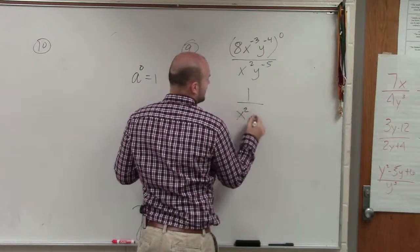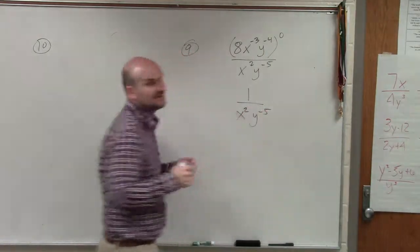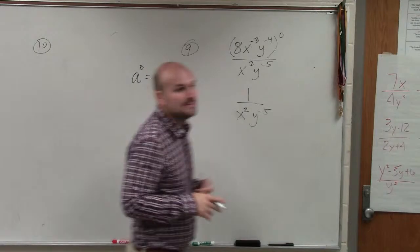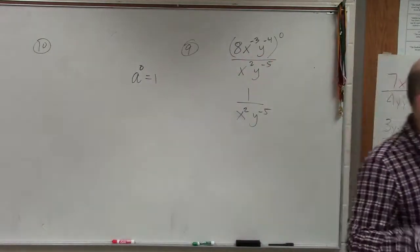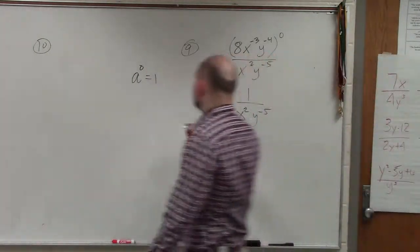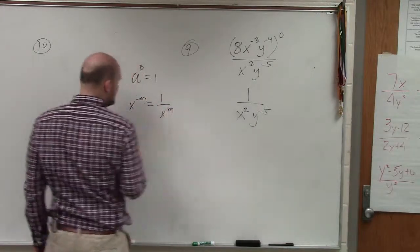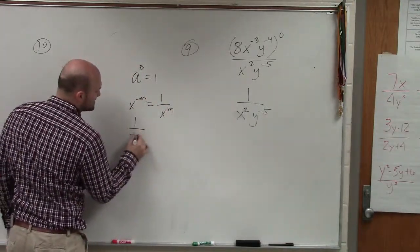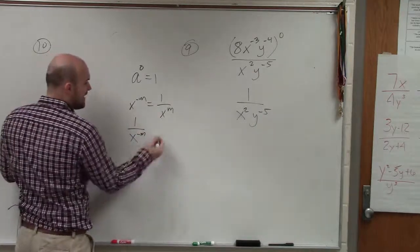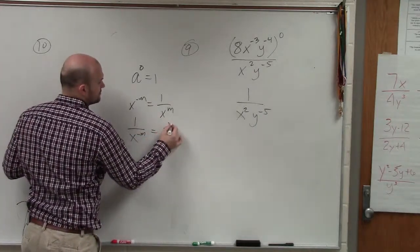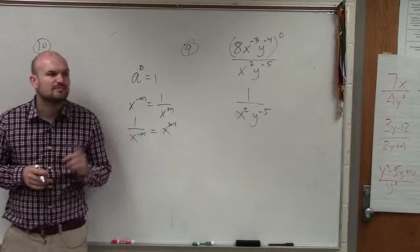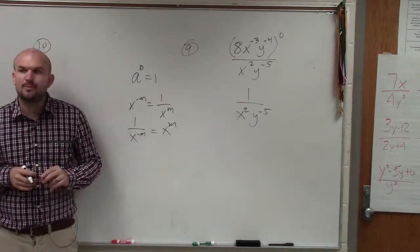Therefore, it's x squared over y to the negative fifth. Now, to further simplify this, remember, we cannot have negative exponents. What we talked about was x to the negative m equals 1 over x to the m. So if I have 1 over x to the negative m, to write this as positive, I'd write it up in the numerator.